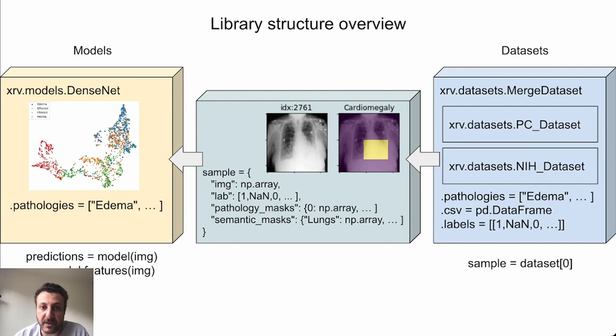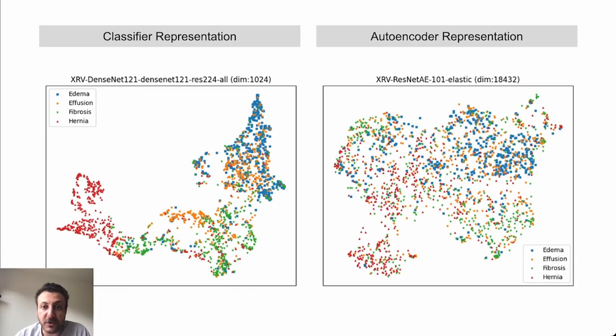For pre-trained models, there is a dot pathologies field, which indicates what the model is predicting. Here are UMAPs showing the representations over a set of images for the DenseNet and the autoencoder. They look pretty good, right?